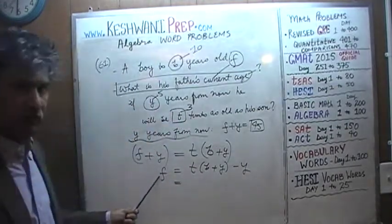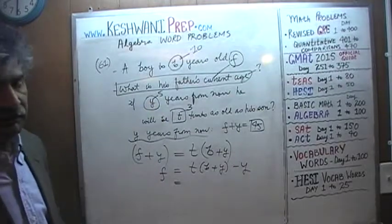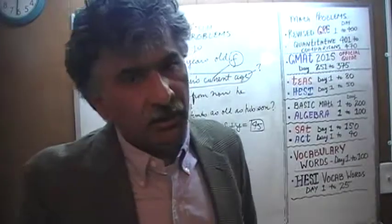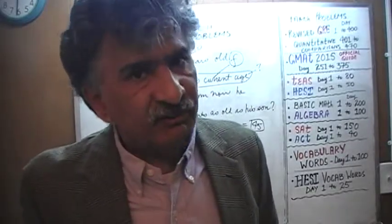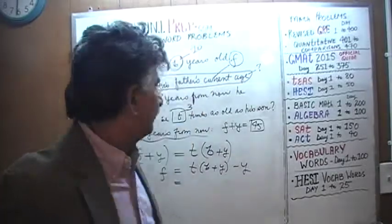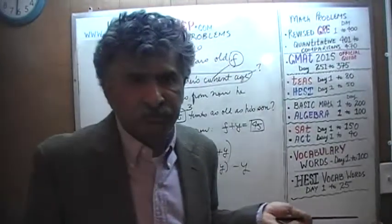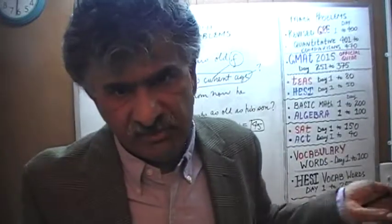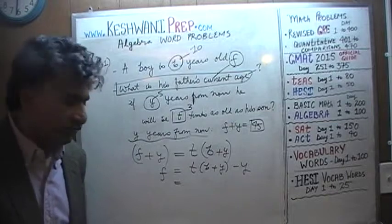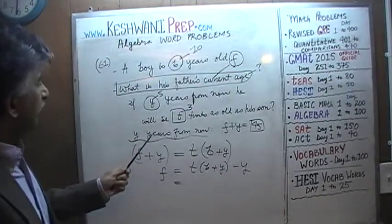Why does the father need to be 40 years old today? Because we are pretending the son is 10 years old today. Five years from now the son is going to be 15, and we are told the father is going to be three times as old. Three times 15 is 45. The father is going to be 45 five years from now, which means he must be 40 today. T is 3.